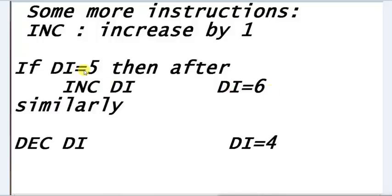So before we had DI is equal to 5, but now after applying INC we have value 6. And the decrement instruction works in similar fashion, like decrement DI. Suppose DI was 5 and we applied decrement instruction, so now we have value of DI equal to 4.